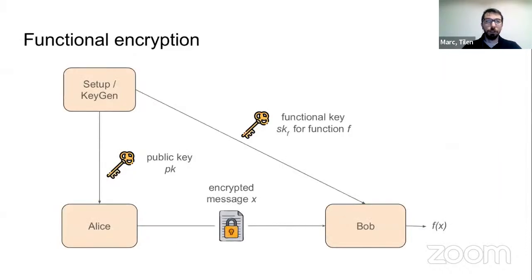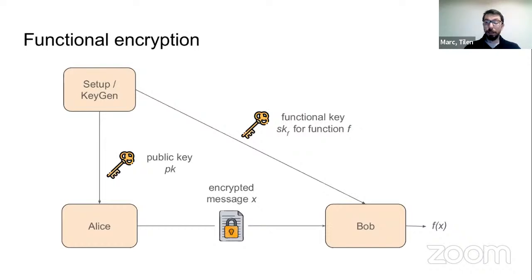As you might know, functional encryption is a generalization of public key encryption. We have a setup process that produces public keys, allowing an encryptor — Alice in our case — to encrypt a message X. Independently, a key generation process produces so-called functional keys depending on a function F, given to a decryptor Bob. Bob can decrypt from the encrypted message X a function of X, so F of X, but without revealing the message itself. The only information Bob should get is the result of this function.